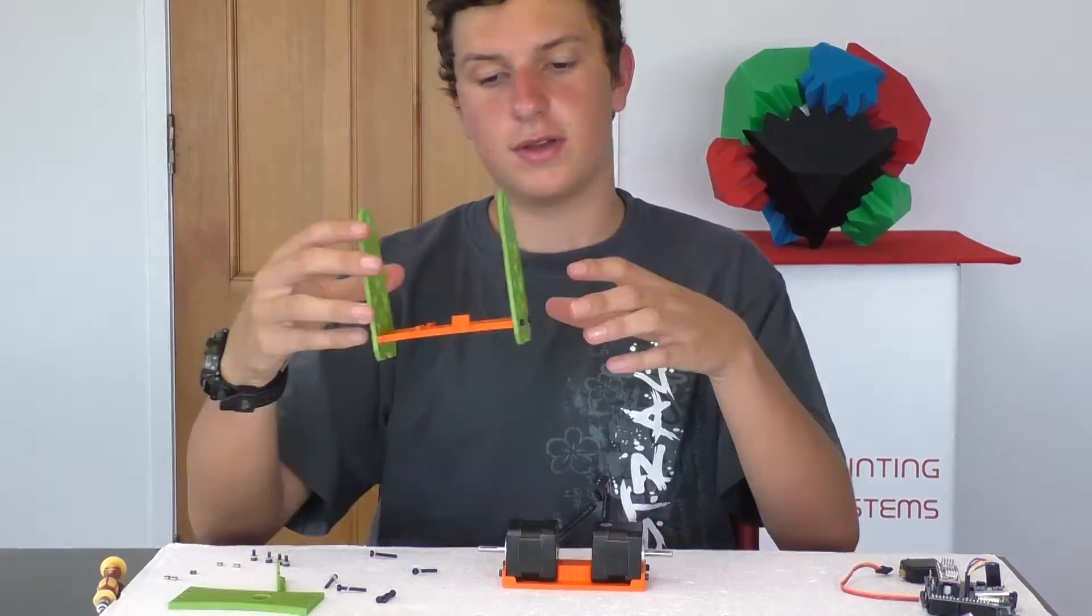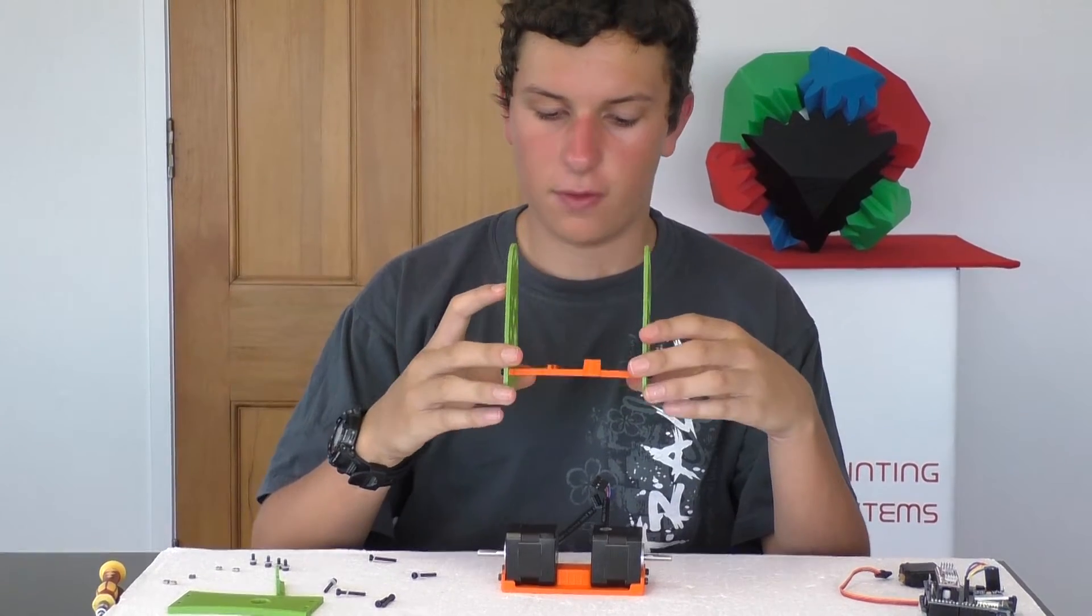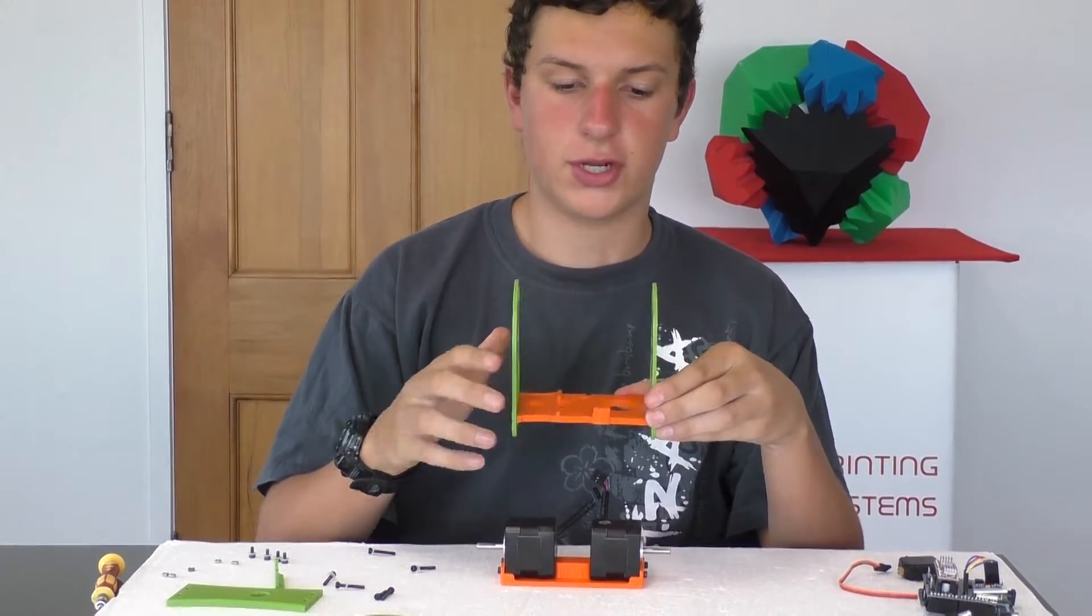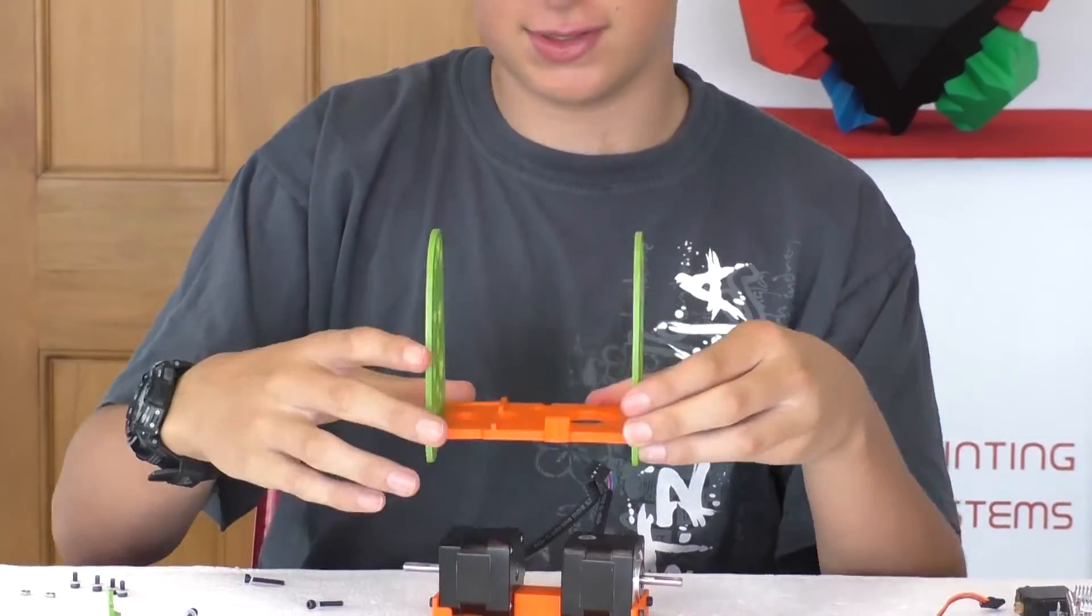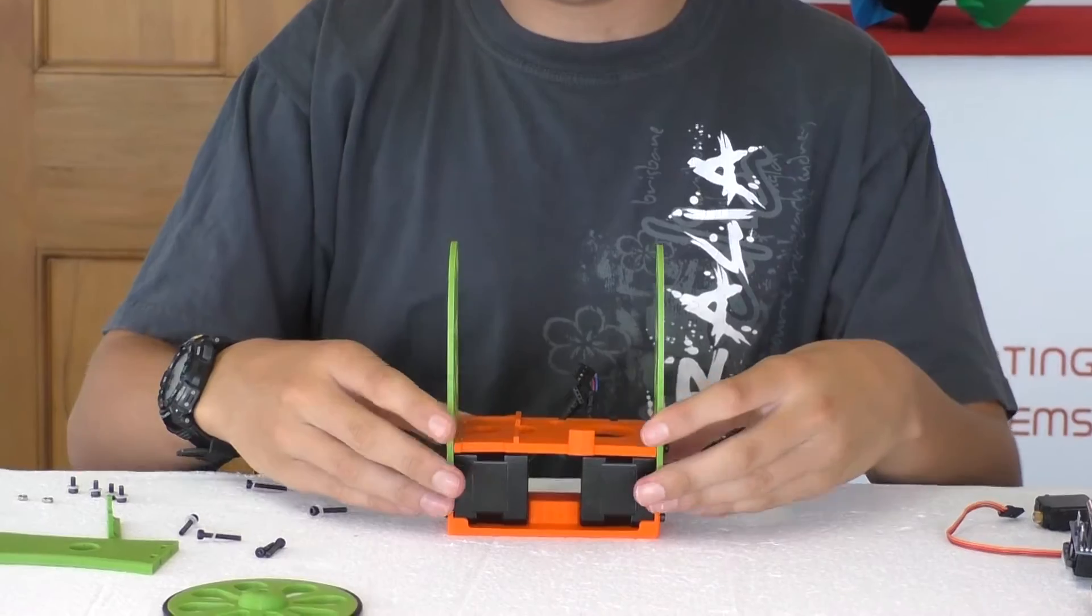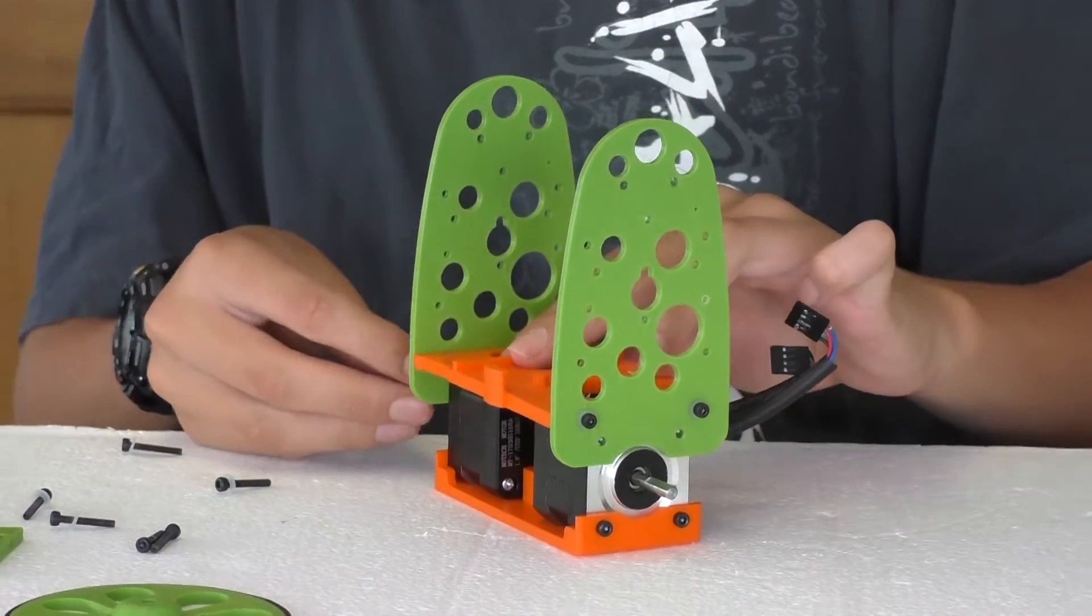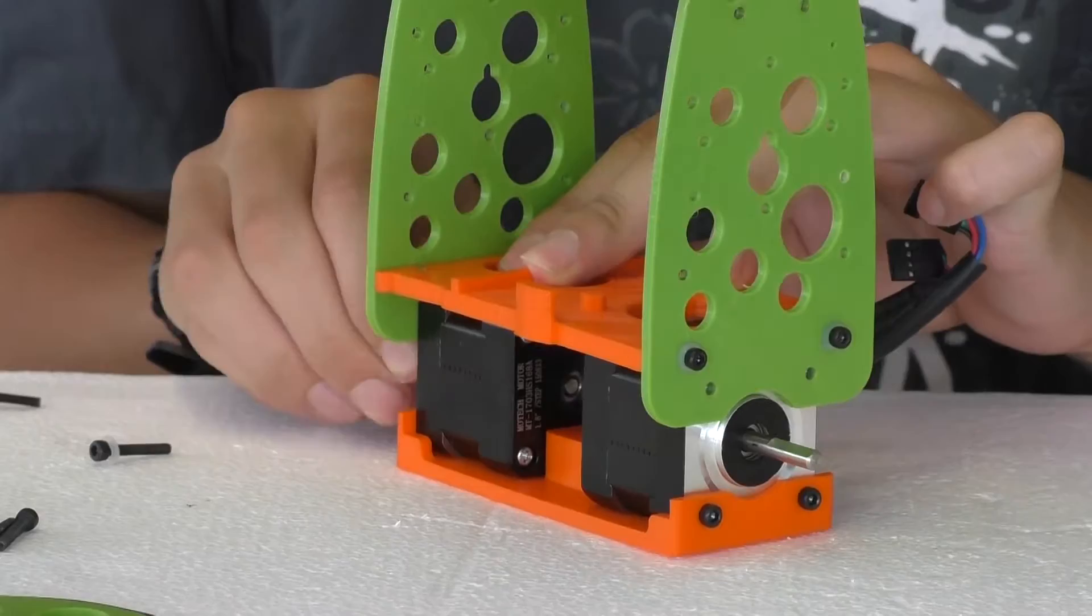Now, we need to put the side panels and the second floor on top of the motors. It is very important that you make sure this large clip is on the opposite side of the cables, like this. Then, you'll need to screw in the side panels to the motors.